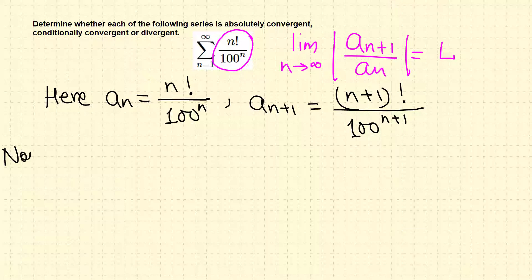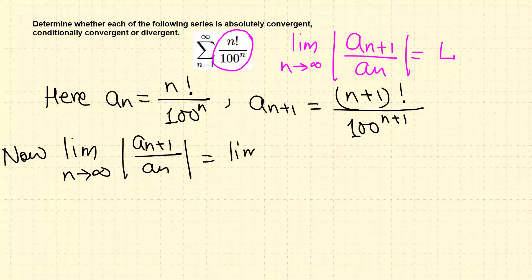Now let's take the limit at infinity of a_{n+1} over a_n. In this case, since a_{n+1} are all positive terms, we don't need absolute value anymore.